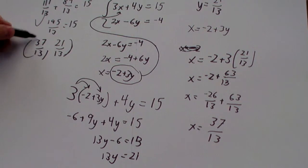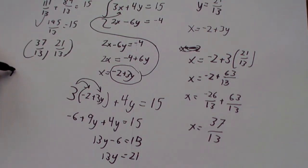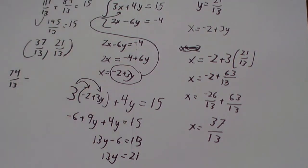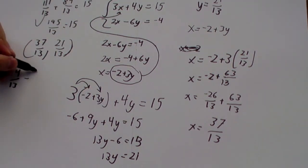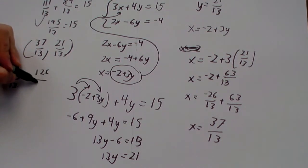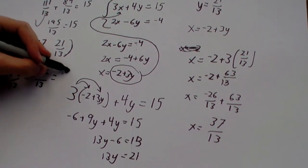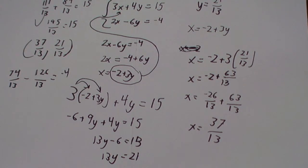2x minus 6y is negative 4. 2 times 37 over 13, which is 74 over 13. minus 6 times 21 is 126 over 13 equals negative 4.